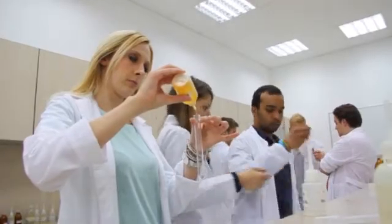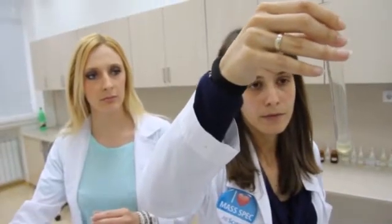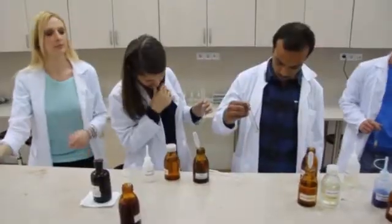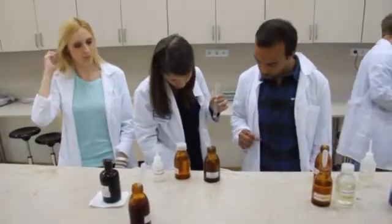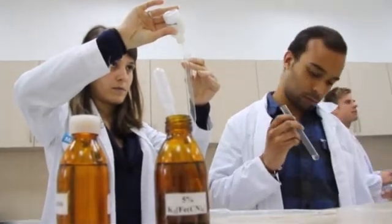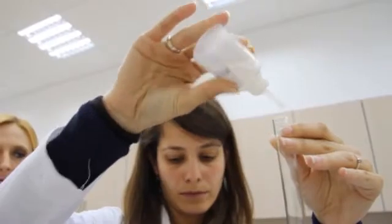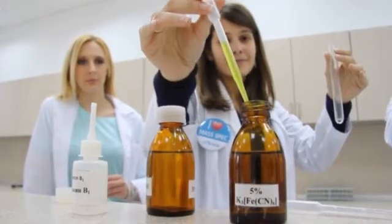Today we are going to perform some experiments to see the chemical properties of vitamins. As you probably know, vitamin C is a powerful antioxidant. That's why we are going to observe the reduction properties of vitamin C against potassium permanganate.